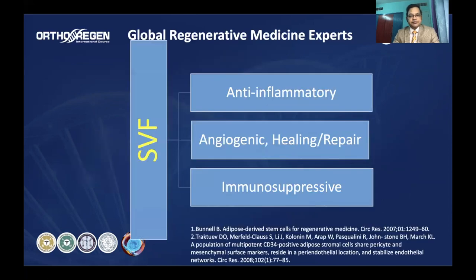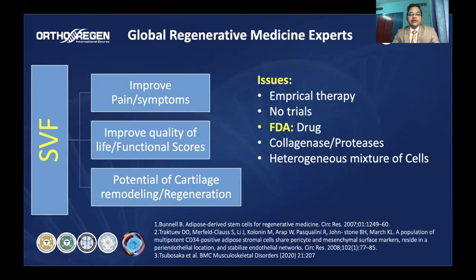Because of this composition, SVF has been shown to have anti-inflammatory effects, promote angiogenesis, promote healing and repair, and act as an immunosuppressive agent. The studies that have used SVF for osteoarthritis have shown improvement in pain, function, and scores, along with potential for cartilage remodeling and regeneration — results more or less similar to those seen with culture-expanded stem cells. However, this remains empirical therapy with no proper trials yet, though some are now underway.